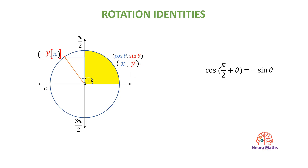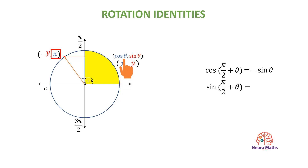The y-coordinate of the image is the x-coordinate of the original point. So, the sine of the angle pi over 2 plus theta is equal to x, which is the cosine of the original theta.